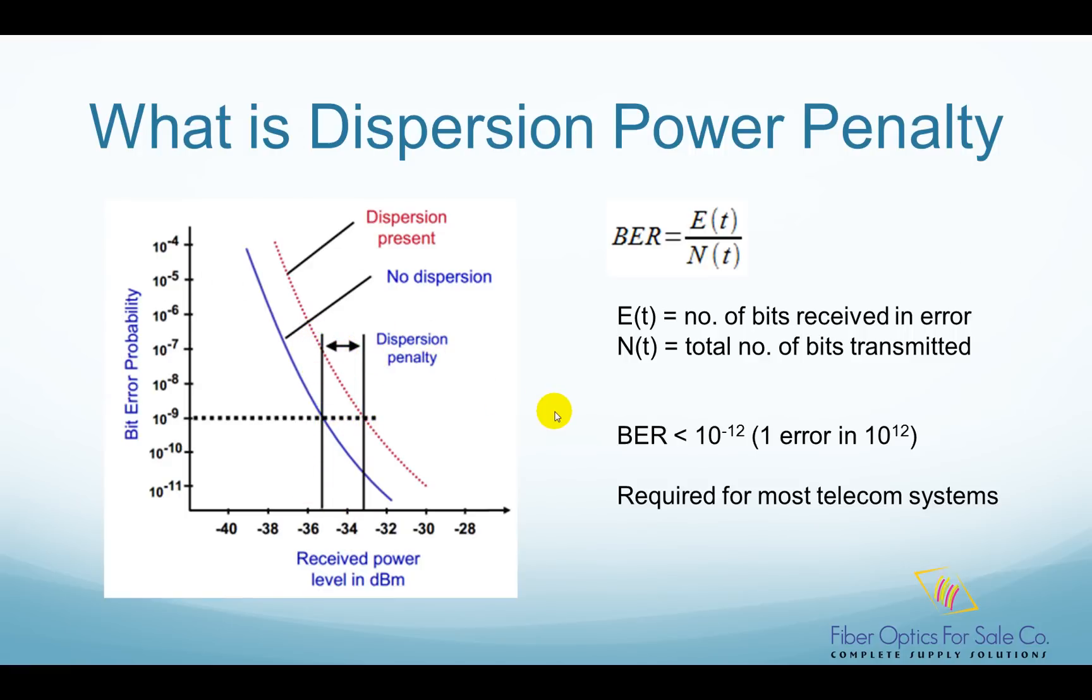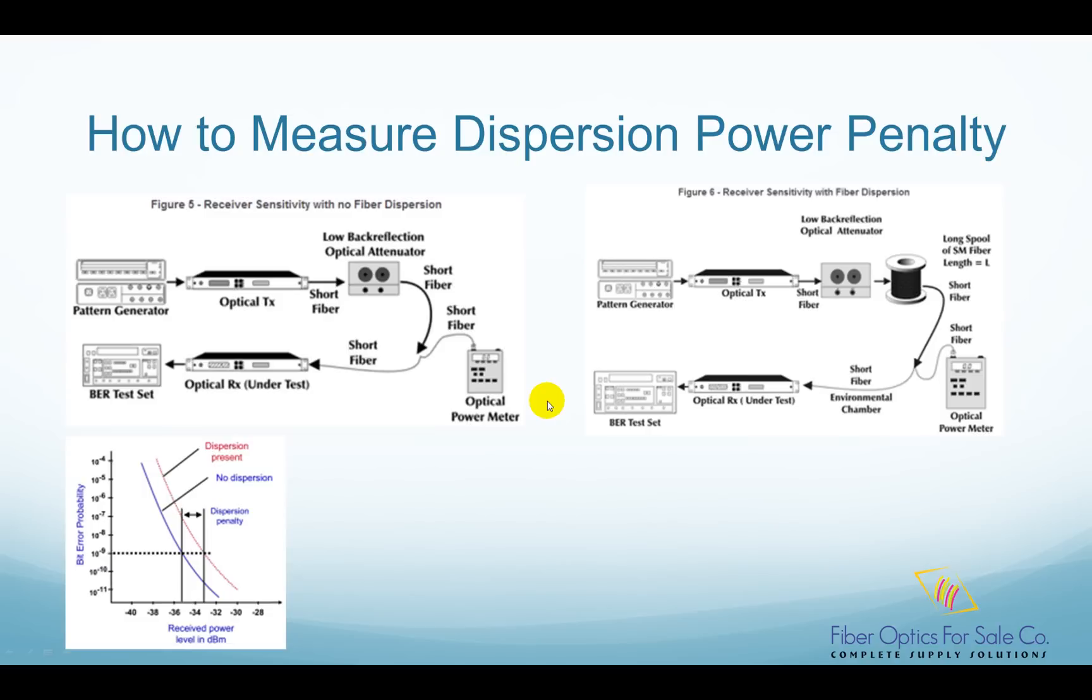Then how do we measure dispersion power penalty? First, we set up the bit error ratio measurement equipment with no fiber dispersion.